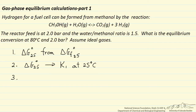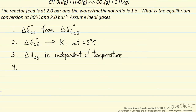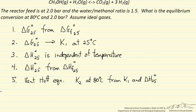Next, we want to calculate the equilibrium constant at 80 degrees C. First, we're going to assume that the heat of reaction is independent of temperature, which is a good approximation because the temperature range is small. We'll calculate the heat of reaction at 25 from the heats of formation, then use the Van't Hoff equation to get the equilibrium constant at 80 degrees C from K at 25 and the heat of reaction. Finally, we'll use that equilibrium constant with an expression relating the activities of each species raised to their stoichiometric coefficients.